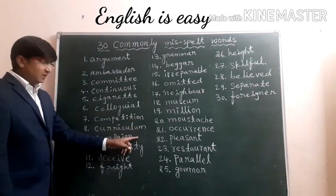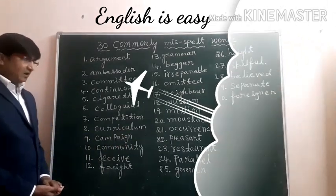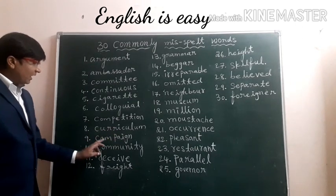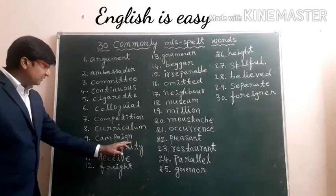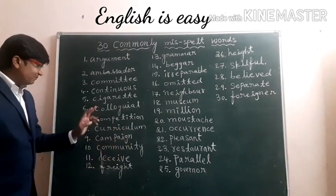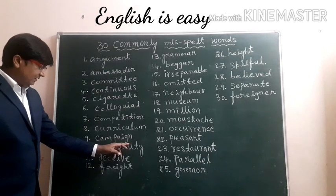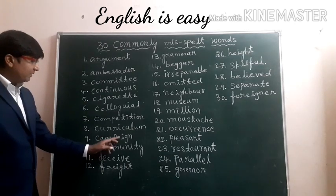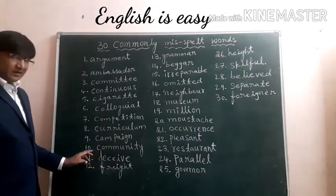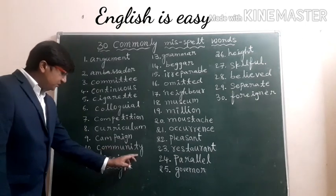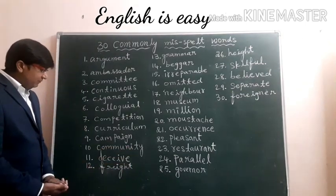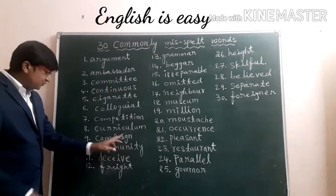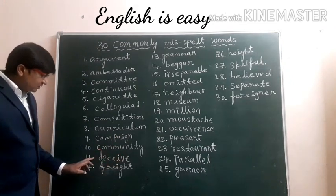Eighth one: Curriculum. Even in this word, we write single R. But remember, we have to write double R. Ninth one: Campaign. When we write this word, we just miss the letter G. So we need to remember to write C-A-M-P-A-I-G-N. Tenth one: Community. Even in this word, we write single M. But remember, we are supposed to write double M.